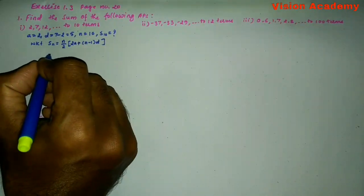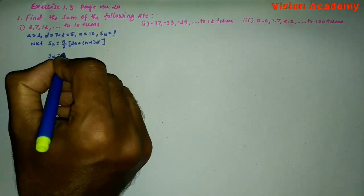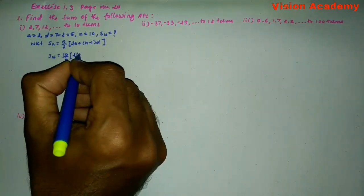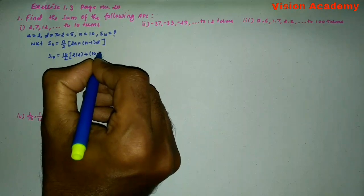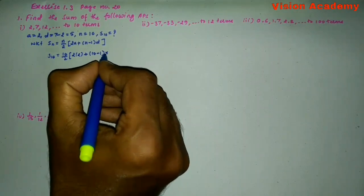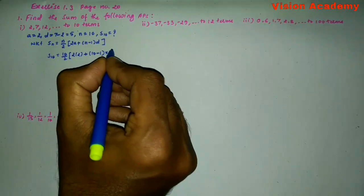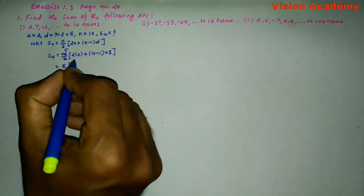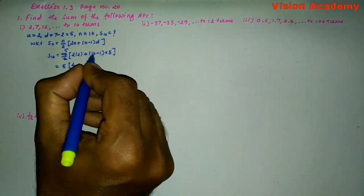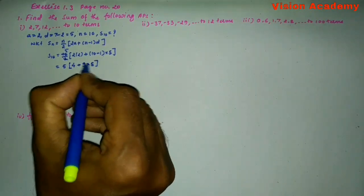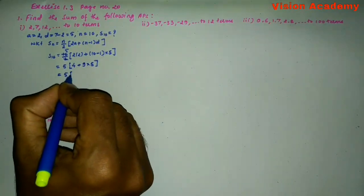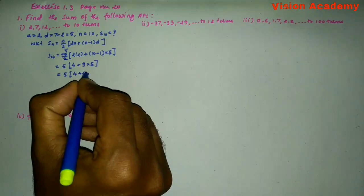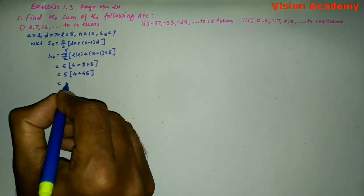Let us substitute the values. S_10 is equal to 10 divided by 2, into 2 into 2 plus 10 minus 1 into 5. Now let us simplify. Here, 5 into 2, 2 is 4, plus N minus 1 is 9 into 5. Here, 5 into 4 plus 9 into 5 is 45.